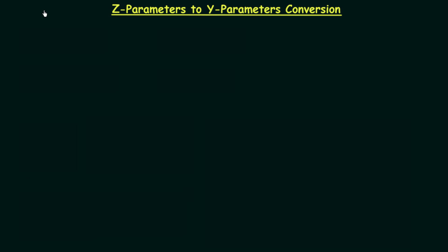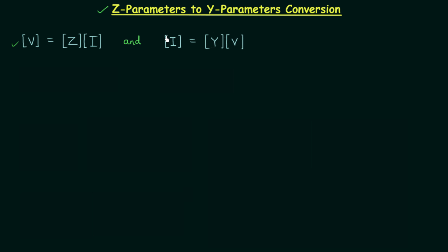In the last lecture we performed the conversion of Y parameters to Z parameters, and now in this lecture we want to perform the conversion of Z parameters to Y parameters. This means we know the Z parameters and we want to express the Y parameters in terms of Z parameters. We know that the voltage matrix is equal to the product of the impedance matrix and the current matrix, and the current matrix is equal to the product of the admittance matrix and the voltage matrix.